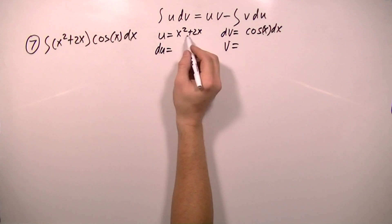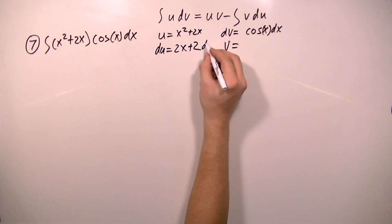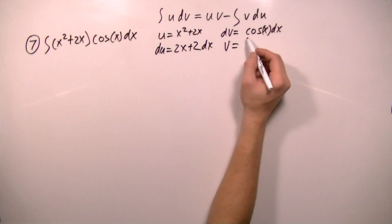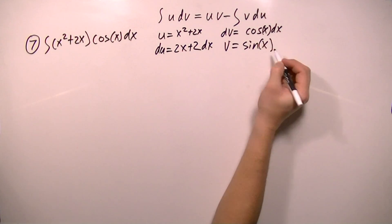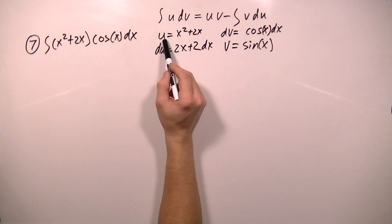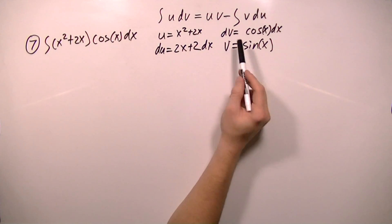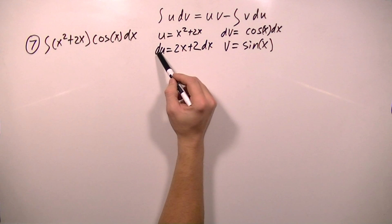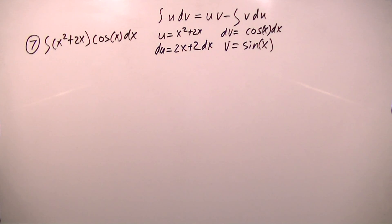And when I take the derivative of u, I get 2x plus 2 dx. And when I take the integral of dv, I get sine x. Now we've done the hard part by deciding which factor we wanted to set equal to u, and which factor we wanted to set equal to dv. We found the derivative of u, and we found the integral of dv.